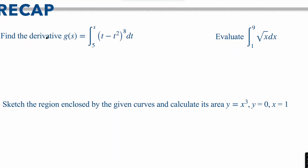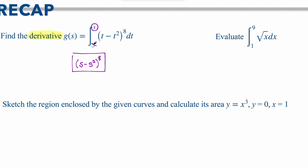On the first practice problem, it says find the derivative. What you're doing is taking the integral and then taking the derivative of the integral, which means they cancel out, leaving you the original problem with the variable you're plugging in. So the answer should be s minus s squared, raised to the 8th. The 5 means nothing because if you take the integral and plug in a number, you have a number for an answer, and when you take the derivative of a constant it goes away — that's why the 5 does not matter.